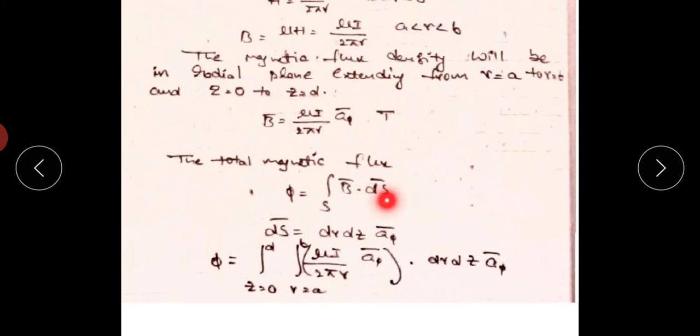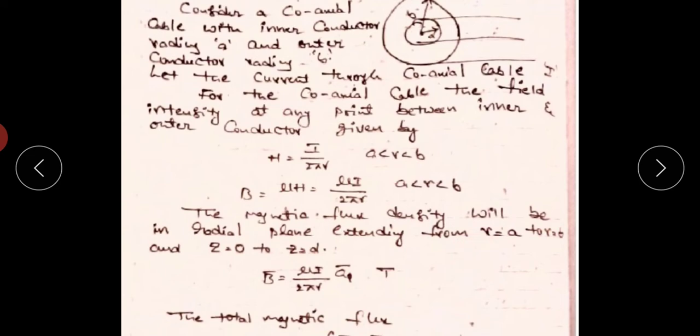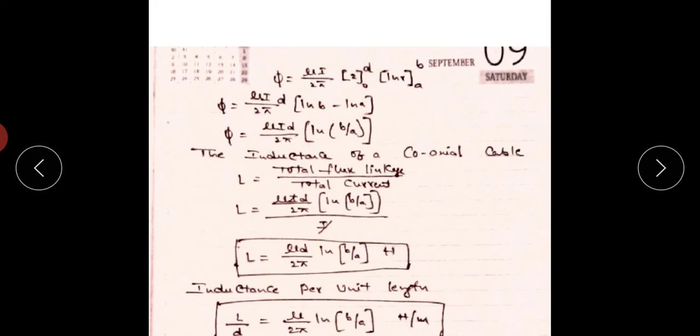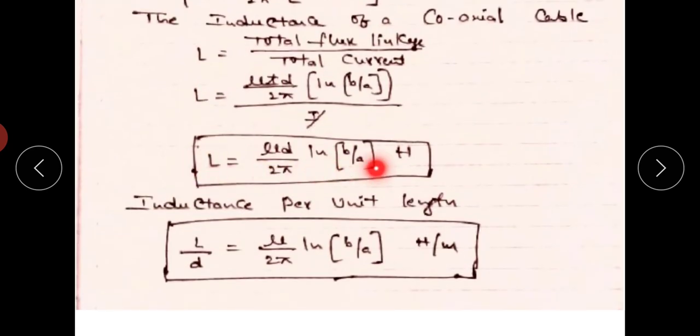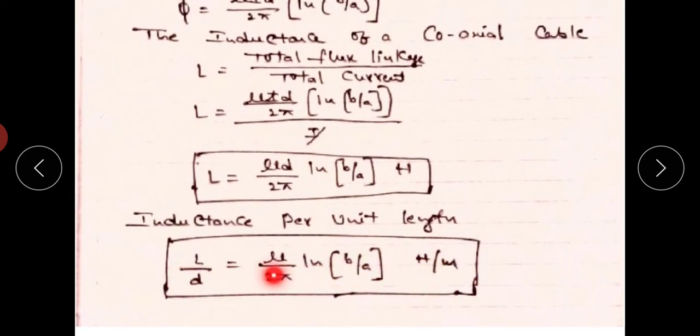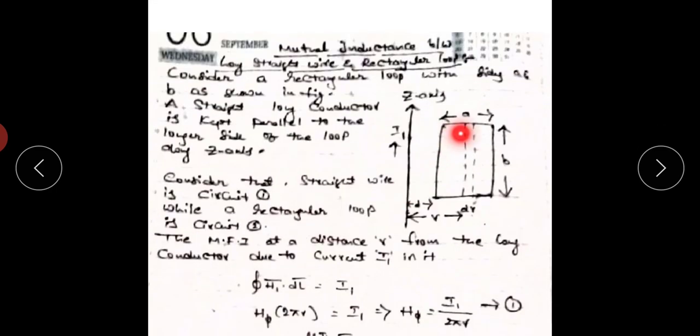The differential surface area is normal to the φ coordinate because the current flows in the Z-direction, producing flux in the φ-direction. In cylindrical coordinates (R, φ, Z), the differential surface area normal to φ is dR · dZ · â_φ. Since the number of turns equals one, flux linkages equal flux: λ = φ. Therefore L = flux linkages / current. This completes both derivations: mutual inductance between a straight conductor and rectangular or square loop, and self-inductance of a coaxial cable.